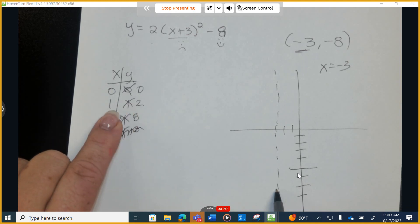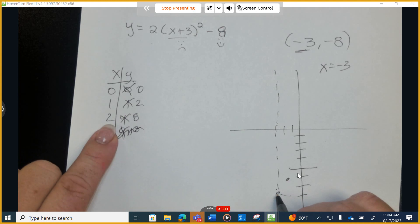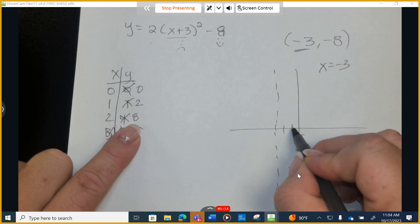One to the... which way am I going here? One to the right and two up. So one to the right, one to the right and two up. Two to the right and eight up. Two to the right and eight up.